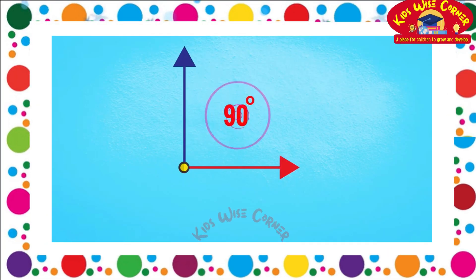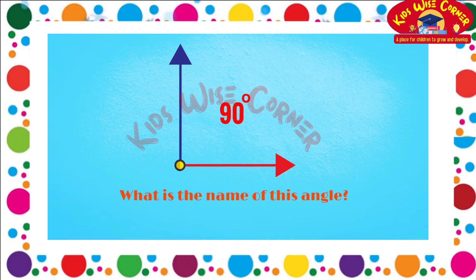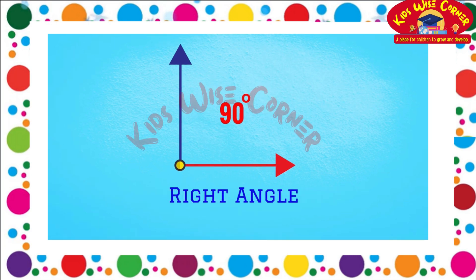We have a name for an angle that measures 90 degrees. Do you know what it's called? A right angle! Unlike other angles that are represented by an arc, a right angle is indicated with a little square like this.